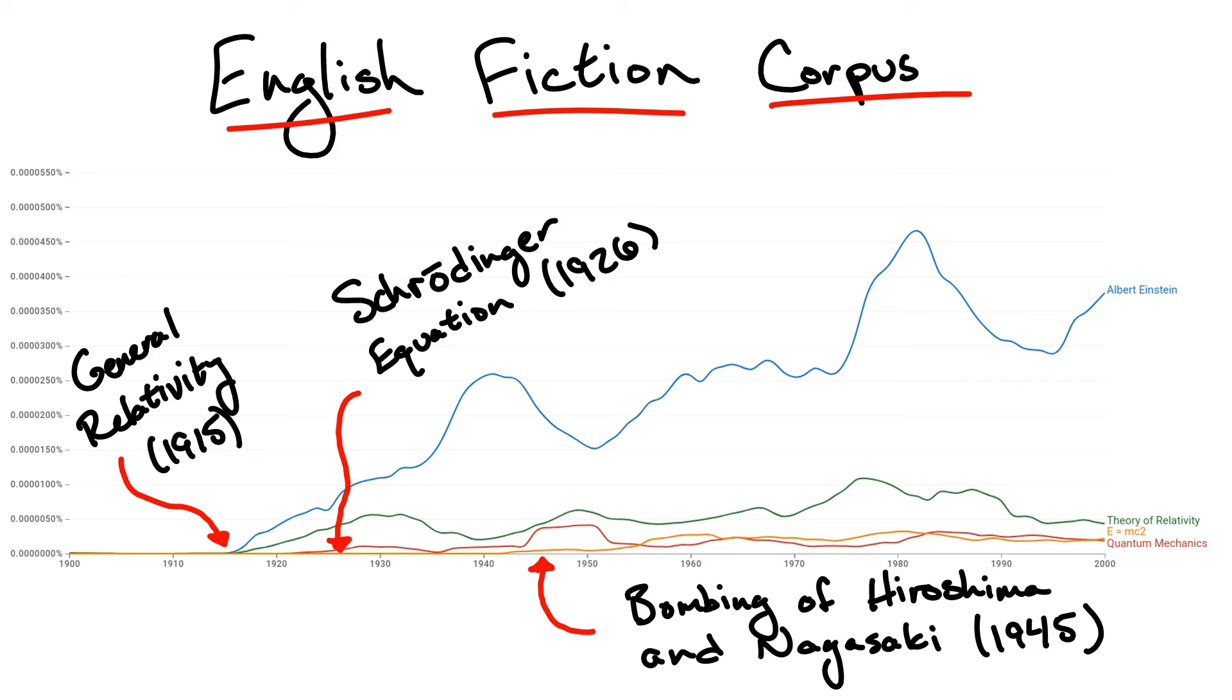So Einstein and his theories, and the others that appeared from the scientific revolution of the early 20th century for that matter, were popular already long before the Manhattan Project, but the equation itself only gained popularity after the creation of nuclear weapons.